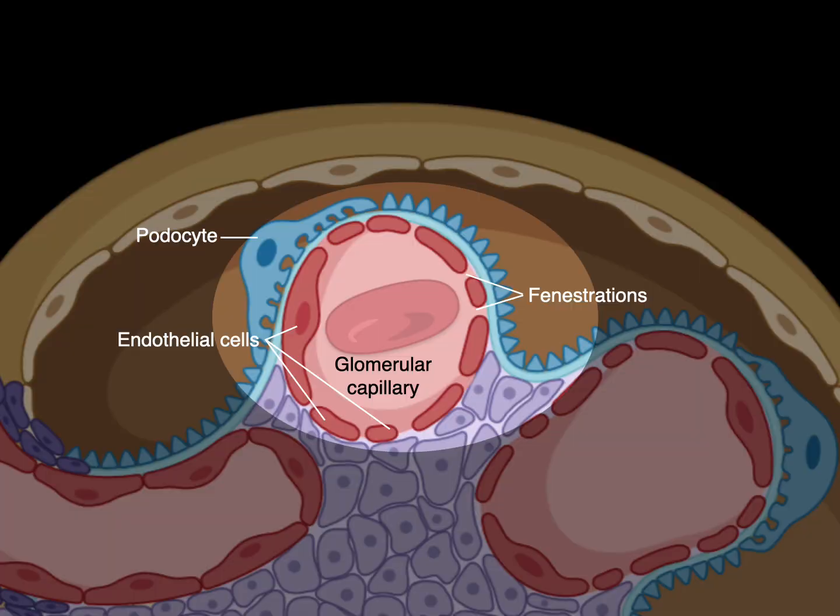Next are the podocytes — the prefix podo means foot, like a podiatrist is a foot doctor. Podocytes have foot processes, and these foot processes interdigitate with other podocytes to make filtration slits. So here's the third element.